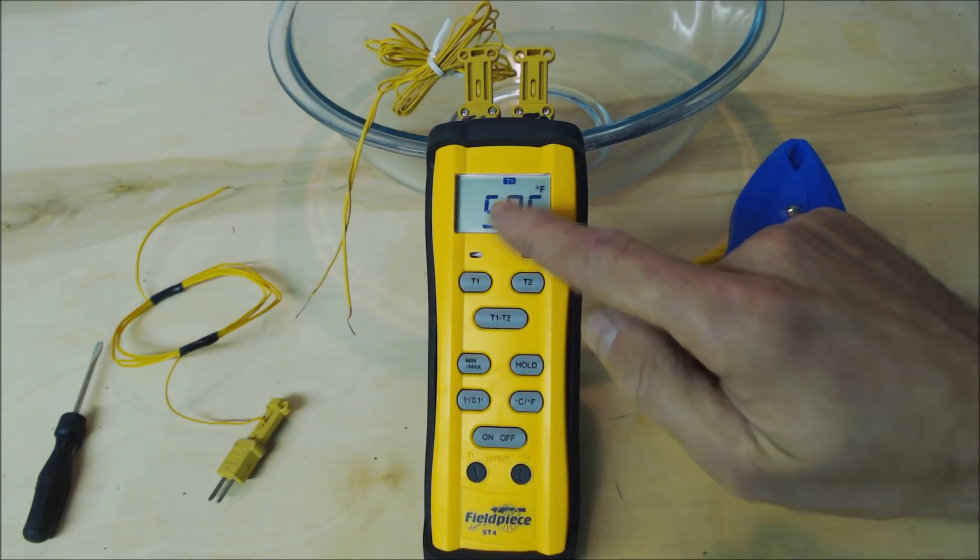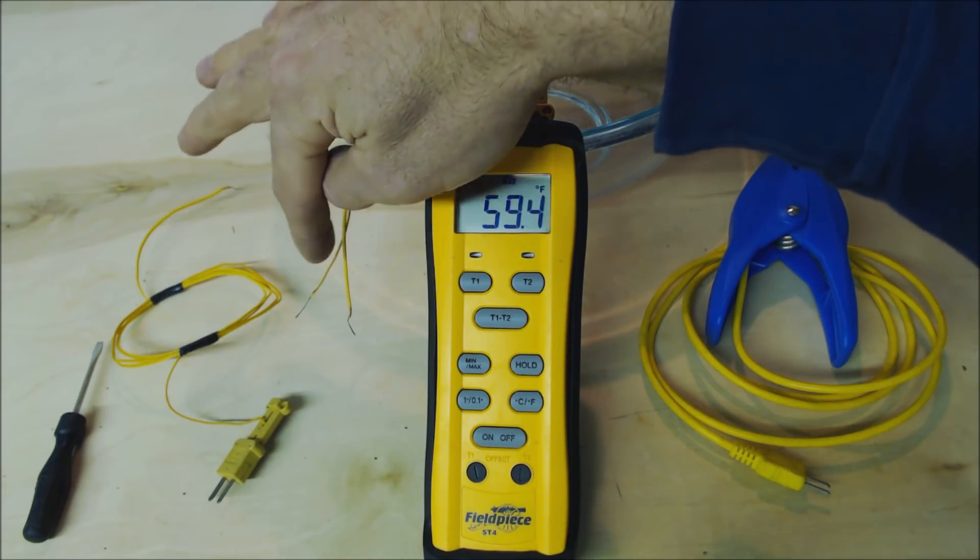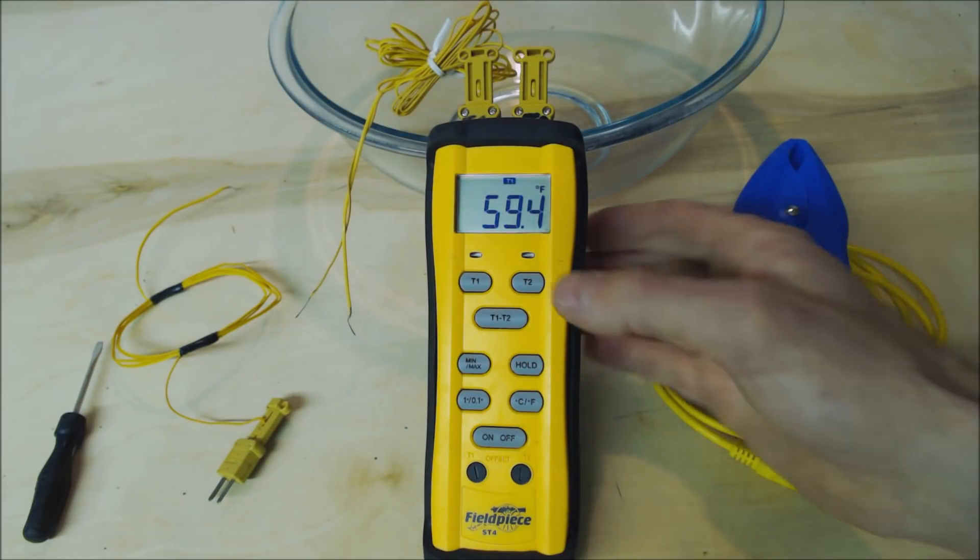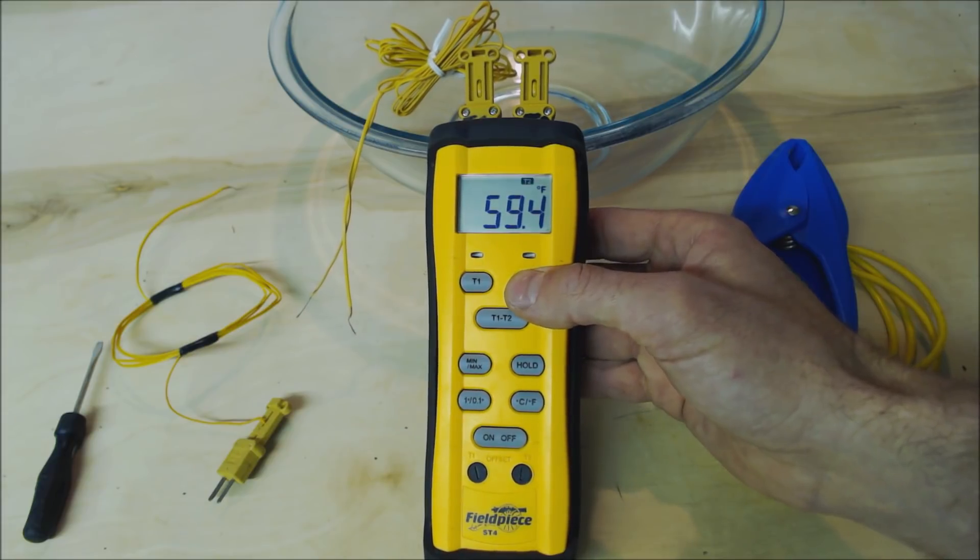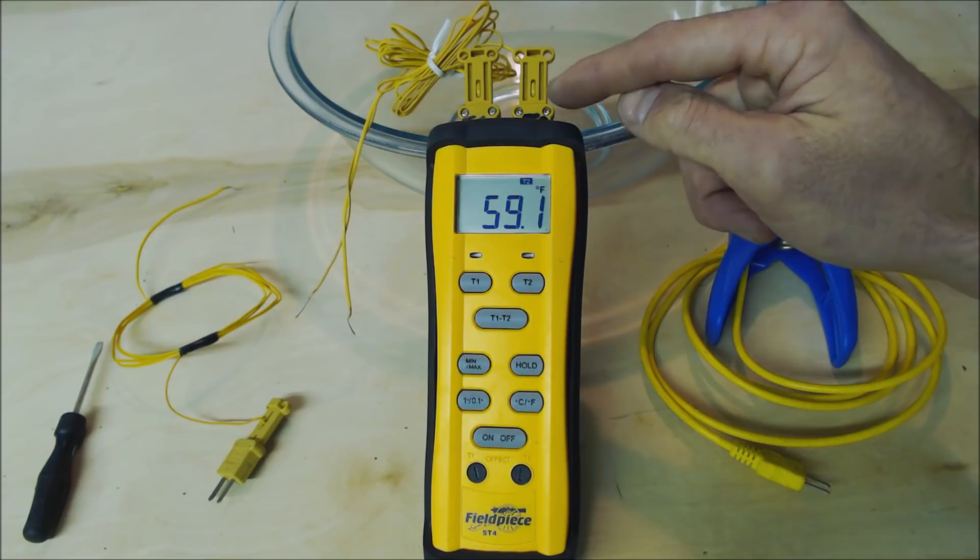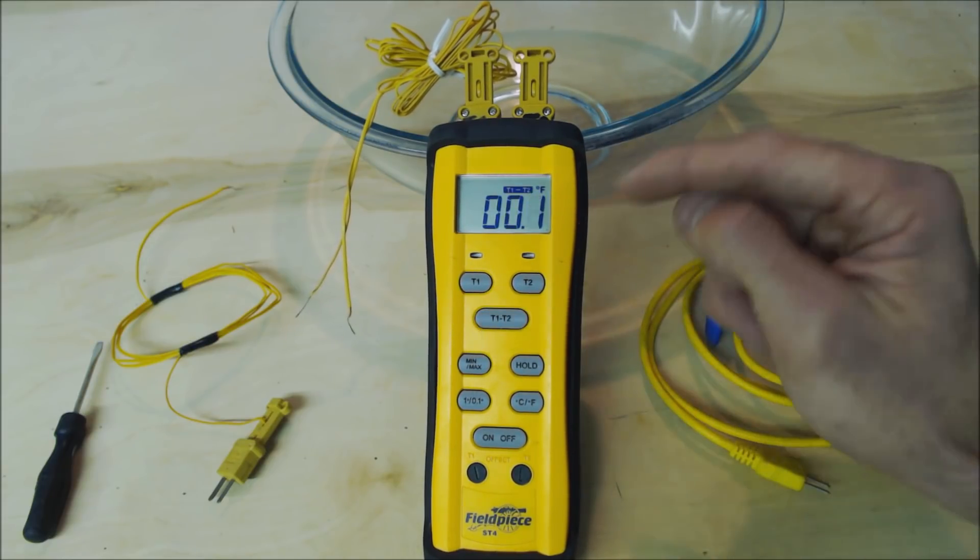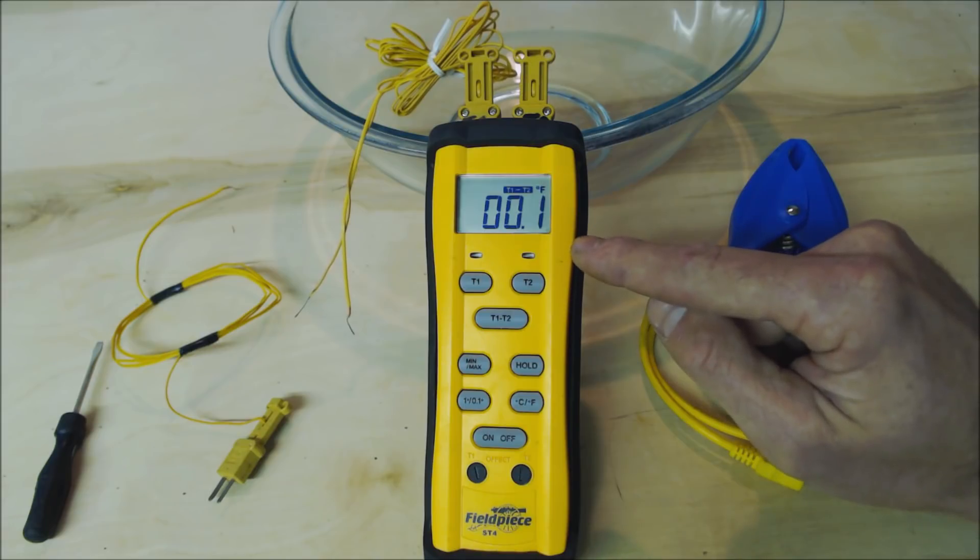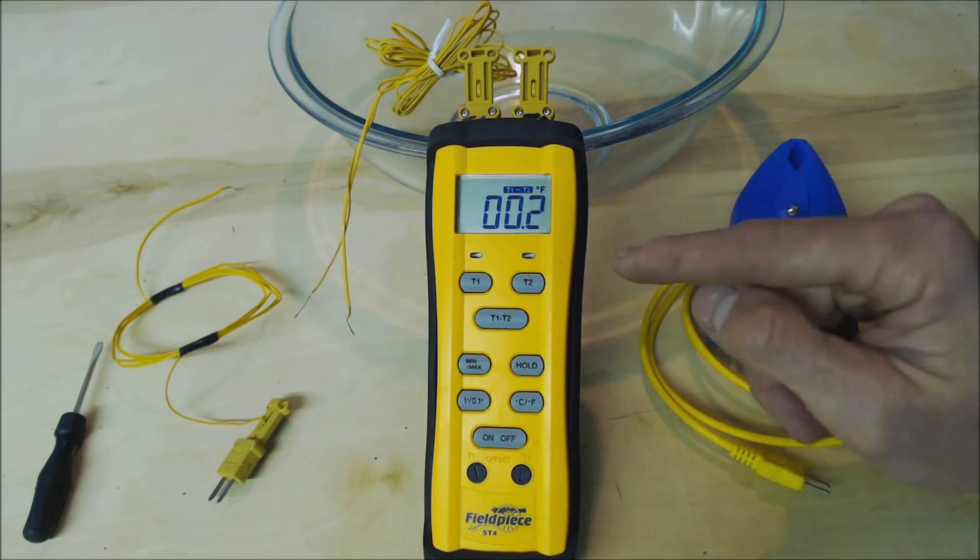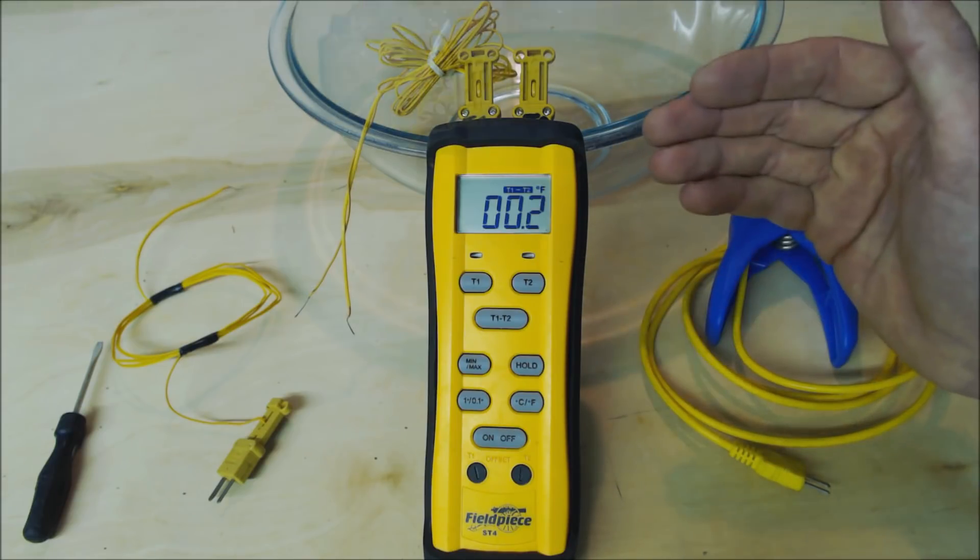Right now we are reading the two right there. I have them all kind of wound up because I want them to take the temperature reading in the same location. So you see we're reading 59.4, we change it to T2 which is this one here and we're about the same measurement. We can take a differential measurement right here and we're at 0.1, 0.2 degrees off from each other and that's very close, but the question still remains are they accurately reading the temperature.